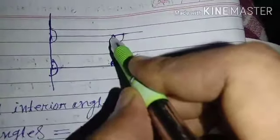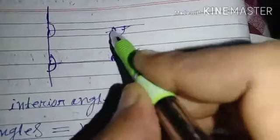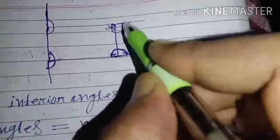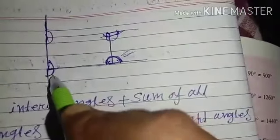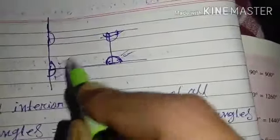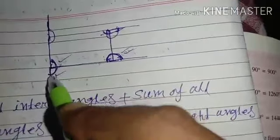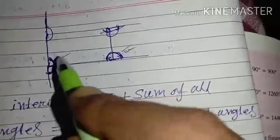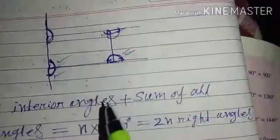Here also, exterior plus interior forming a linear pair. Here also, this is the exterior and this is the interior. If you add these two, then you will get 180. Here also, exterior plus interior you will get 180.